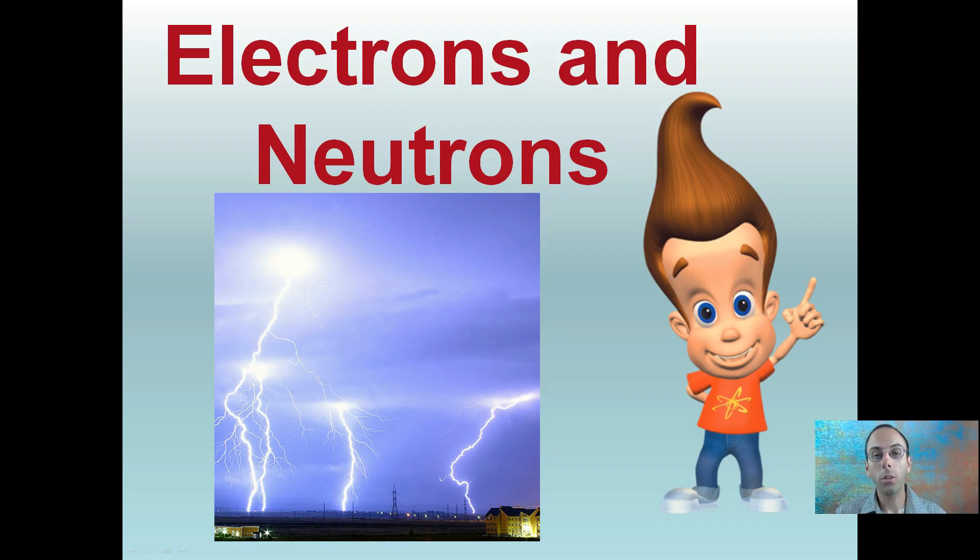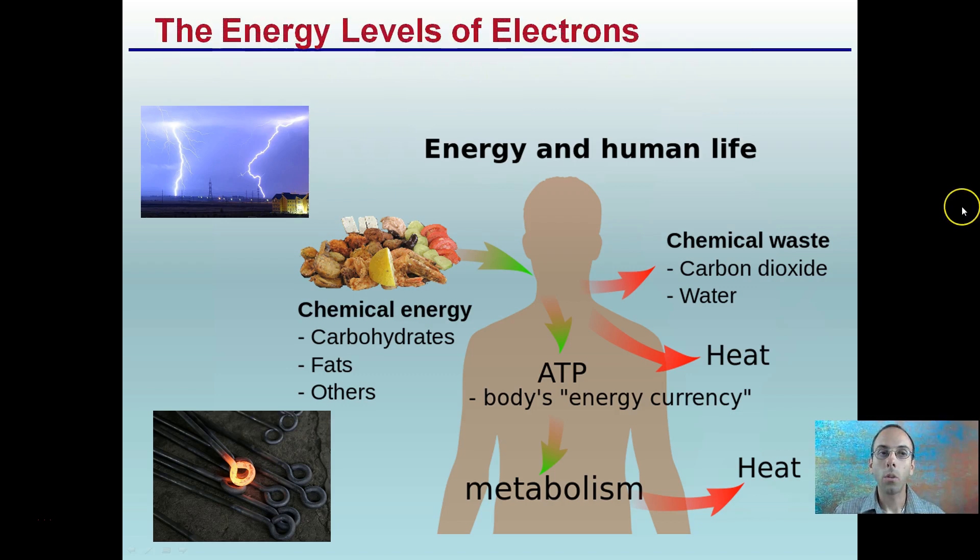Here we're going to look at electrons and neutrons, two of the subatomic particles located in an atom. The energy levels of electrons. We're going to start with the electrons first.